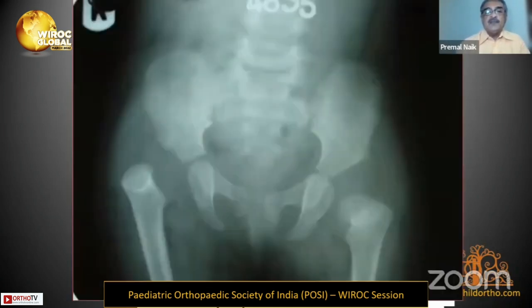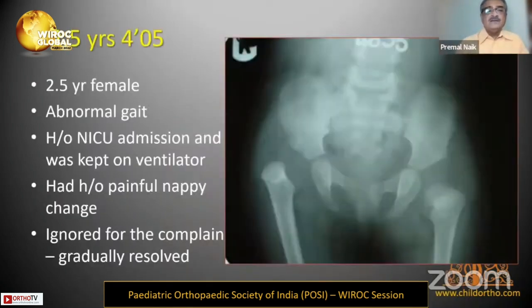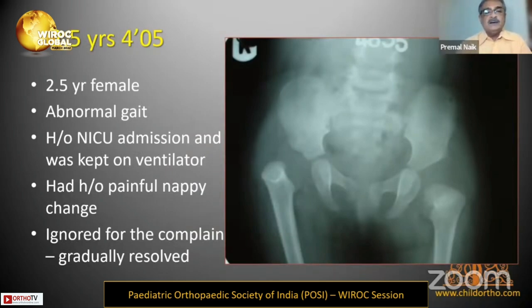This case involves a girl of two and a half years brought with abnormal gait. She had a history of NICU admission, was kept on a ventilator, and had a painful nappy change which was ignored after multiple complaints. Both hips are abnormal; on the right side the capital femoral epiphysis is not present.